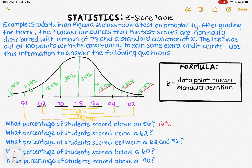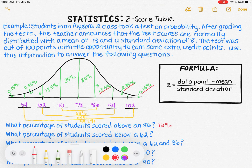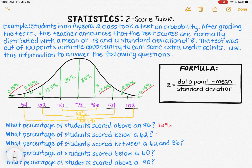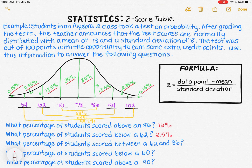The next question asks: what percentage of students scored below a 62? I'm looking for percentages to the left of 62, which is exactly two standard deviations below the mean. So I add 2.35 plus 0.15, giving me 2.5% of students that scored below a 62. The next question asks: what percentage of students scored between a 62 and 86? I add the percentages between 62 and 86: 13.5 plus 34 plus 34, which gives me 81.5%.